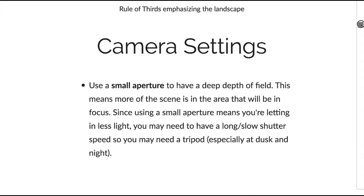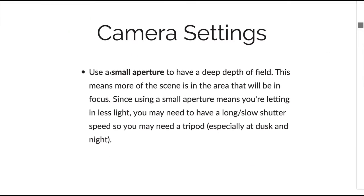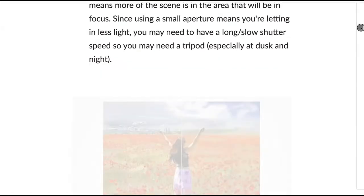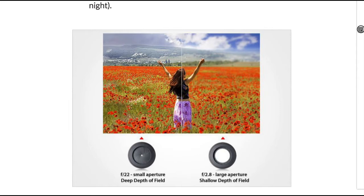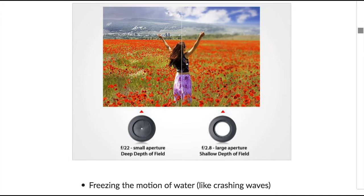When it comes to camera settings, you generally want to use a small aperture so you have a deep depth of field, meaning more of the scene will be in focus. Since a small aperture lets in less light, you need a longer, slower shutter speed, so you may need a tripod — especially when shooting in low light times like dusk and night.